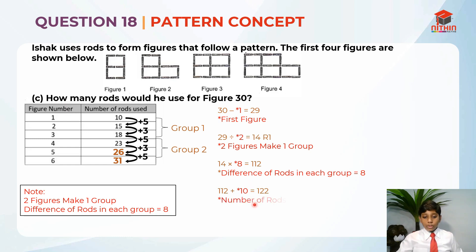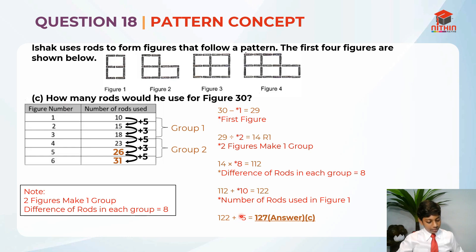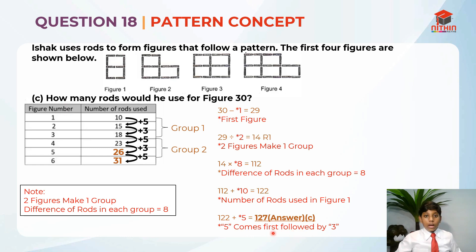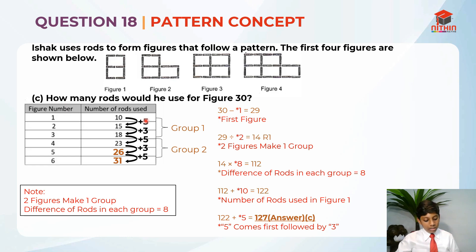So now, 122 plus 5. Where did this 5 come from? This 5 is basically from remainder 1 — see this remainder 1? The 1 is in the group, and it is the first number. So 5 comes first followed by 3. So 5 is number 1 in the group. If it had been remainder 2, I'd add both 5 and 3. But since it is just remainder 1, I only add the first number in the group. So 122 plus 5 equals to 127. So 127 is the answer for part C.